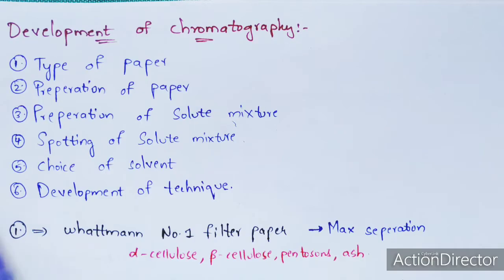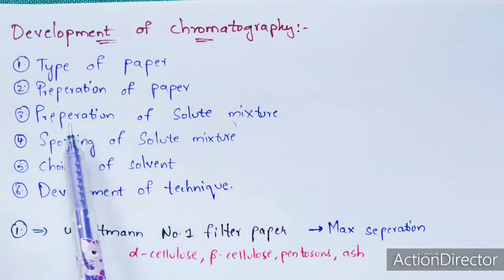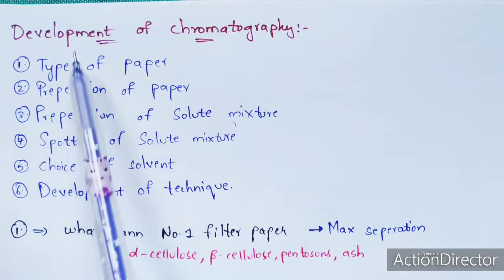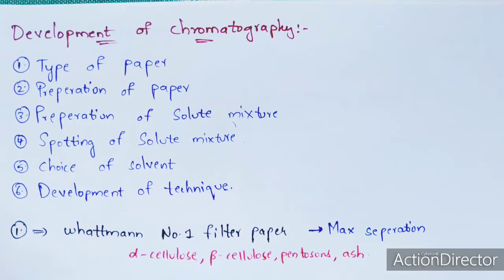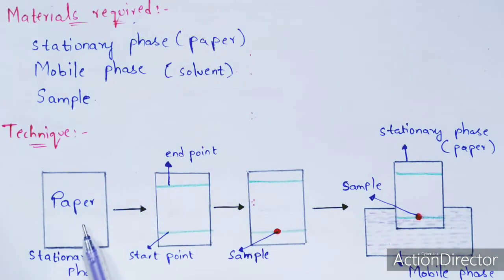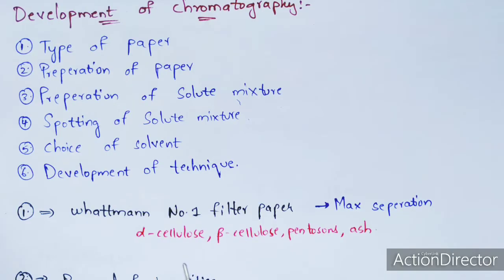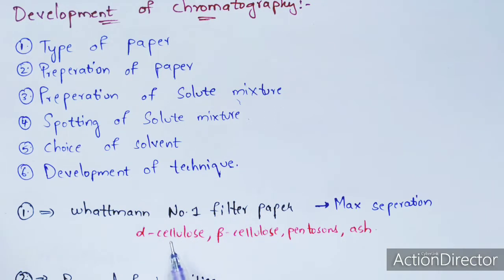The development of chromatography includes: type of paper, preparation of paper, preparation of solute mixture, spotting of solute mixture, choice of solvent, and development technique. For the type of paper, Whatman No. 1 filter paper is used because maximum separation occurs with it. It contains alpha cellulose, beta cellulose, pentosans, and ash, which are not present in normal paper.